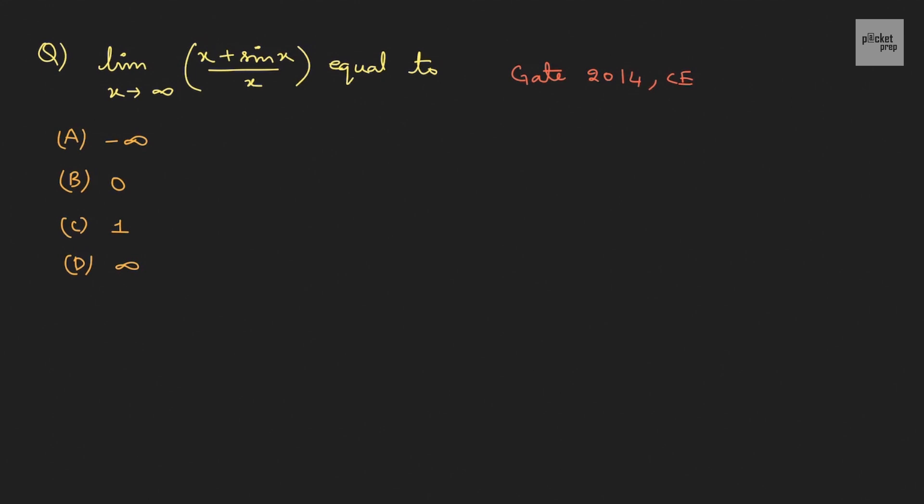Here we have the last question. Gate 2014 chemical engineering, limit x tends to infinity x plus sin x by x. This I can write as limit x tends to infinity 1 plus sin x by x. This 1 can be taken outside because it is a constant. And I can write as limit x tends to infinity sin x by x. Now, again, you may feel this is in standard form and you might write it 1. But it is actually not 1. This is limit x tends to infinity. What we have learned is limit x tends to 0. Therefore, it is not 1. We need to solve this.